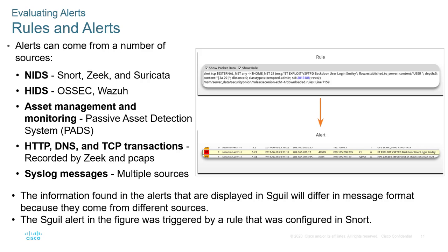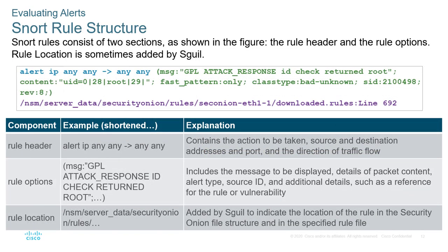A Sguil alert can be triggered by Snort. Looking at the alert and the message provides more detail. A Snort rule has two main sections: the rule header and the rule options, plus a rule location. The header is shown in blue in the figure and contains the action to be taken, the source and destination address, port, and direction of traffic flow. The rule option is shown in green and includes the message to be displayed, detailed packet content, the alert type, source ID, and other reference material.